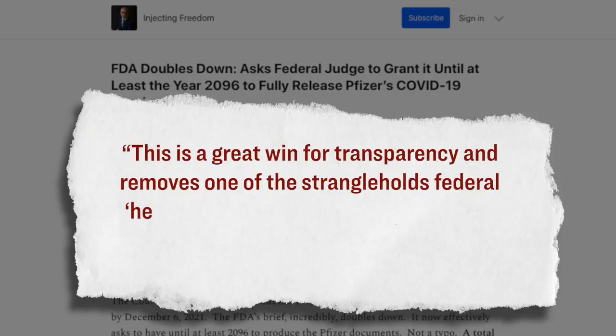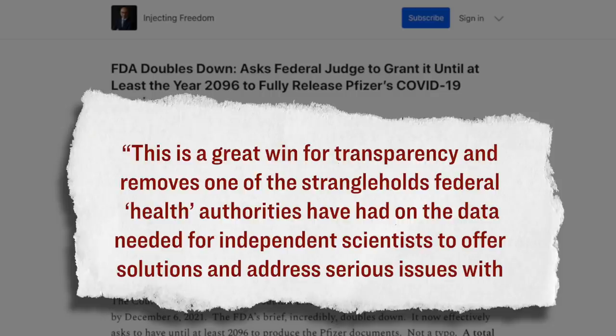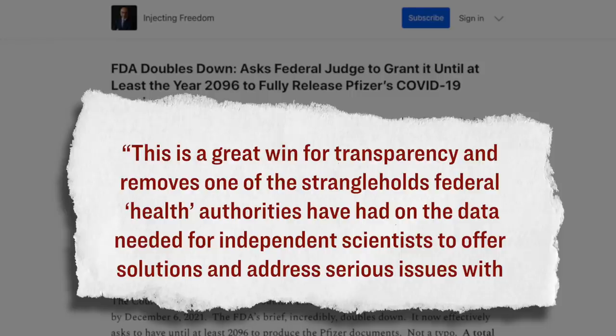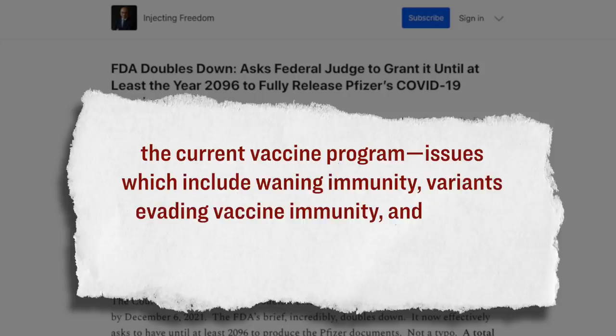As you can imagine, the plaintiffs in the case were rather satisfied with this judge's order. Here's what the lawyer who's representing the Transparency Medical Group released in a statement. This is a great win for transparency and removes one of the strangleholds federal health authorities have had on the data needed for independent scientists to offer solutions and address serious issues with the current vaccine program. Issues which include waning immunity, variants evading vaccine immunity, and as the CDC has confirmed, that the vaccines do not prevent transmission.